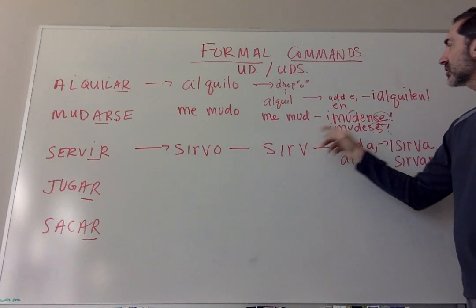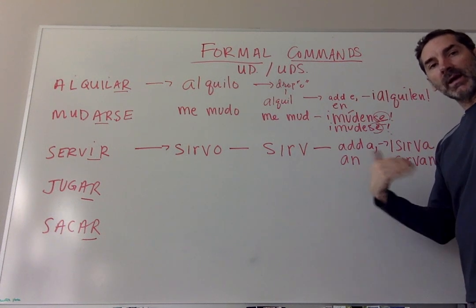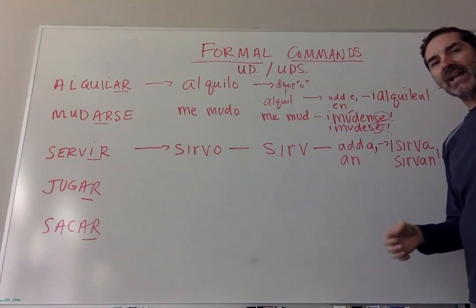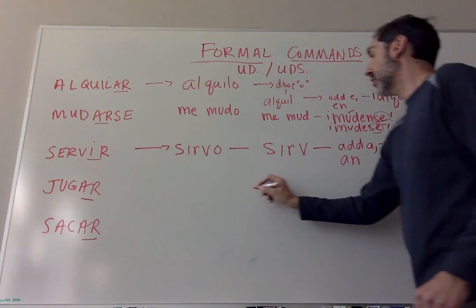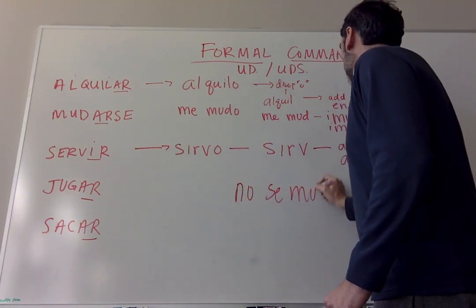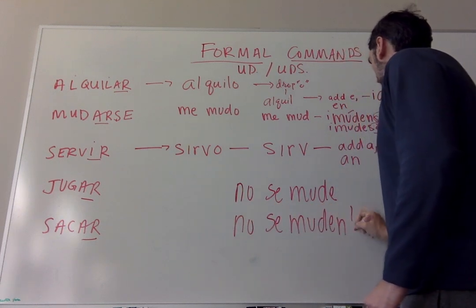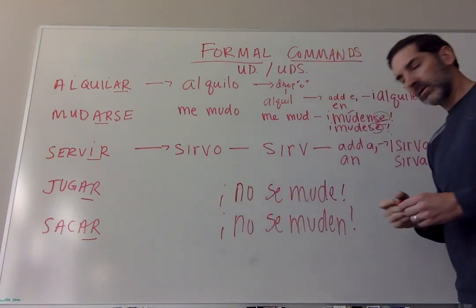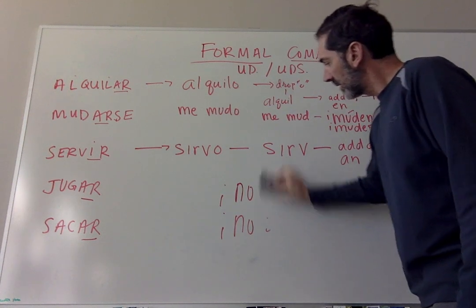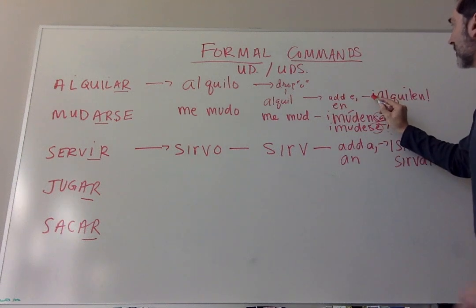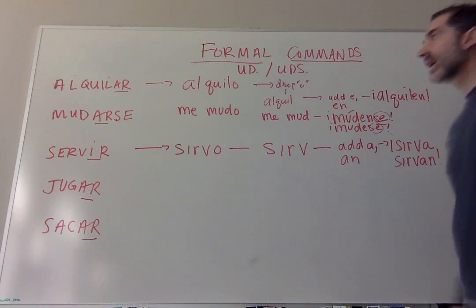We attach our pronouns to affirmative commands, just like we did with the tú form in the last chapter — attached to the positive command. But when it's negative, we say no se mude, no se muden — 'don't move.' And to make alquilar negative, you just put a no in front of the command: no alquilen, no alquile.